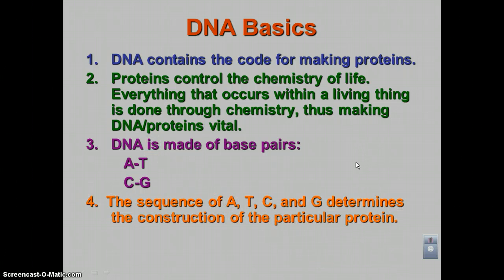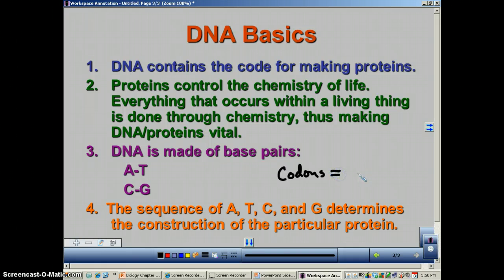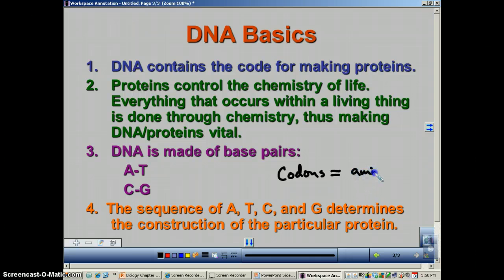Remember the sequence of A's, T's, C's, and G's determines the construction of a particular protein. And remember when we're talking about this, we're dealing with codons. Codons are three base pairs in a row, and one codon creates one amino acid. An amino acid is the monomer of a protein, so one codon equals one amino acid.